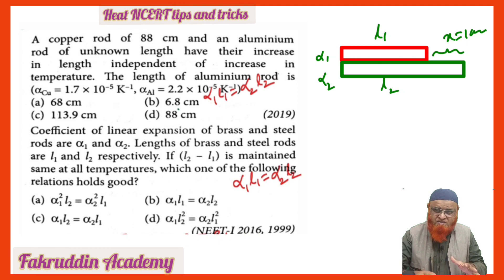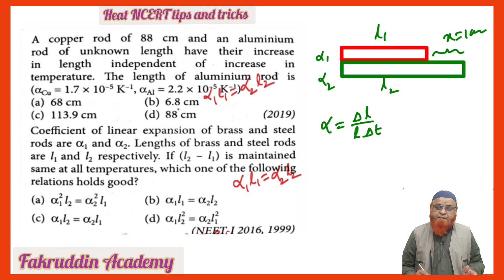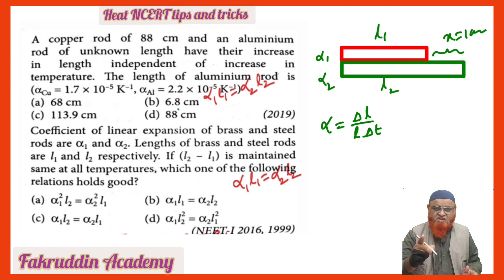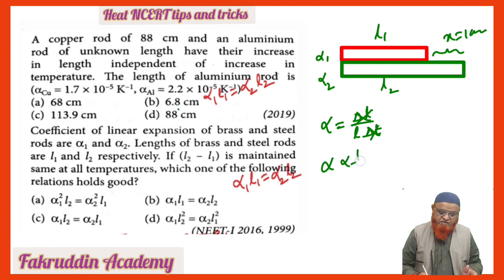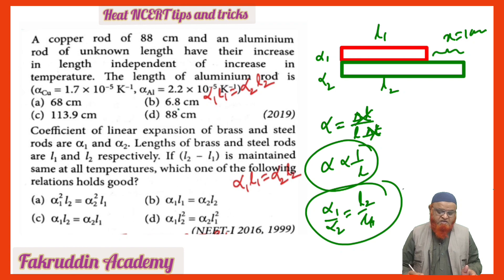In this case, apply the basic formula: α = ΔL / (L · ΔT). Since the length change ΔL and temperature change ΔT are the same for both rods, you can cancel these terms. Therefore, α is inversely proportional to L, which means α₁/α₂ = L₂/L₁. You can apply this concept to solve both problems.